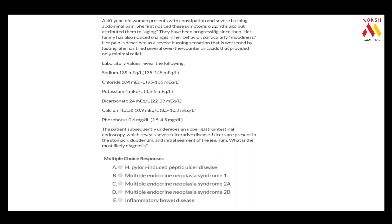A 40-year-old woman presents with constipation and severe abdominal pain. She noticed these symptoms six months ago — so this is chronic, greater than a month, and they've been progressing, meaning getting worse. Her family noticed changes in her behavior, particularly moodiness, so there may be some psychiatric involvement. Her pain is described as a severe burning sensation worsened by fasting, so something is going on in her stomach.